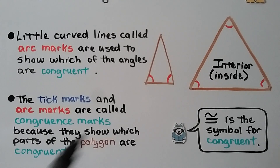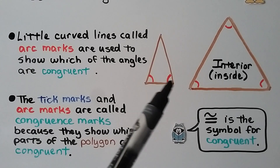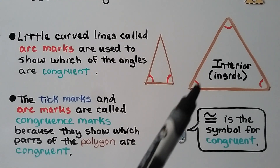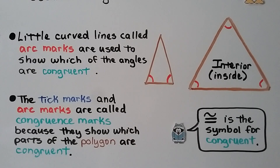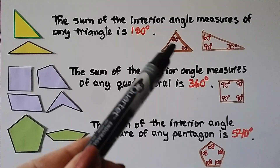These little curved lines are called arc marks, and they're used to show which angles are congruent. This triangle has three equal sides, so it has three equal interior angles, all marked with an arc. The tick marks and arc marks are called congruence marks because they show which parts of the polygon are congruent. The symbol for congruent is an equal sign with a tilde on top.